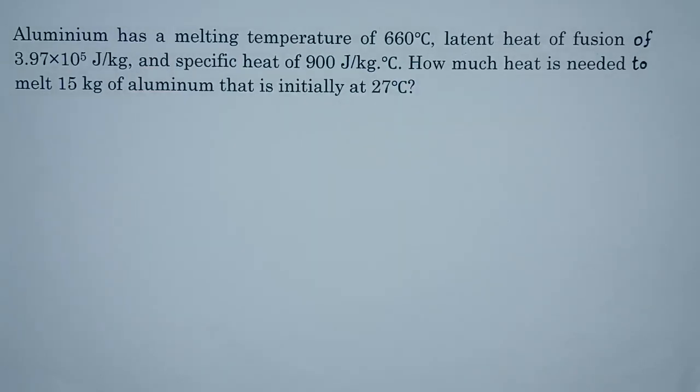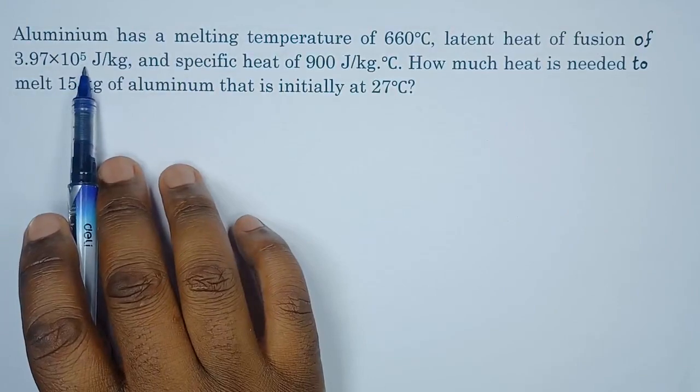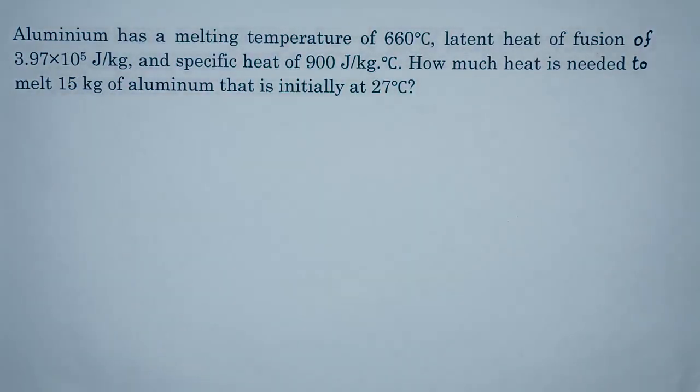Hello guys, so we have this question on temperature. Let's see how we can break it down. Aluminum has a melting temperature of 650 degrees Celsius, latent heat of fusion of 3.97 times 10 to the power 5 joules per kg, and a specific heat of 900 joules per kg per degree Celsius. How much heat is needed to melt 15 kg of aluminum that is initially at 27 degrees Celsius?